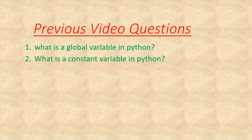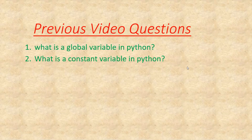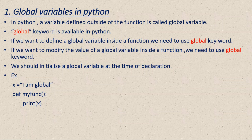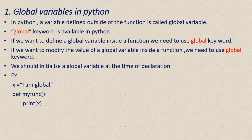Let's start with the previous video questions. What is a global variable in Python? In Python, if a variable is defined outside a function, by default it becomes a global variable. The global keyword is available in Python if you want to define a global variable inside a function. We also need to use the global keyword if we want to modify the value of a global variable inside a function. You should also provide a value at the time of declaration.